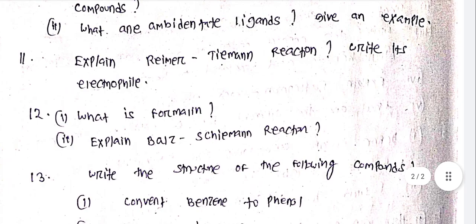Why most of the transition metals form complex compounds? What are ambidentate ligands? Give an example. Explain Reimer-Tiemann reaction.